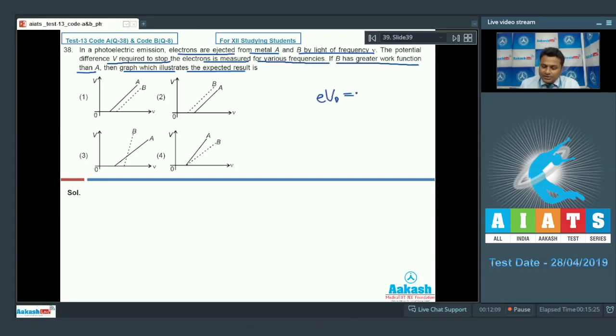e V naught equals h nu minus phi, where phi is the work function. Now more phi means more h nu naught, because phi is given as h nu naught, where nu naught is threshold frequency. Now on these graphs, this is nu naught, so intercept is actually nu naught. If we increase the work function, this nu naught will increase, the intercept will increase. So since phi B is greater than phi A.